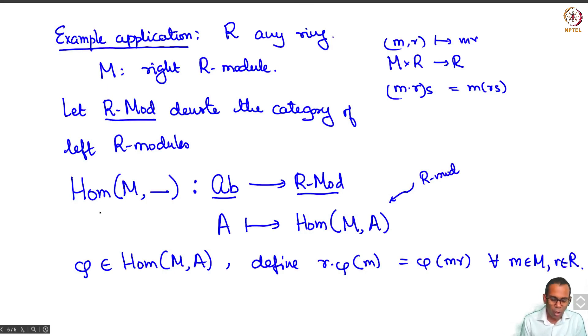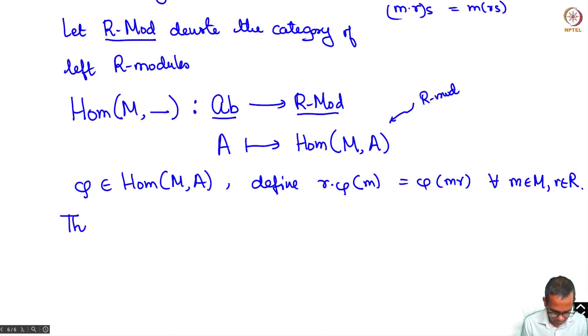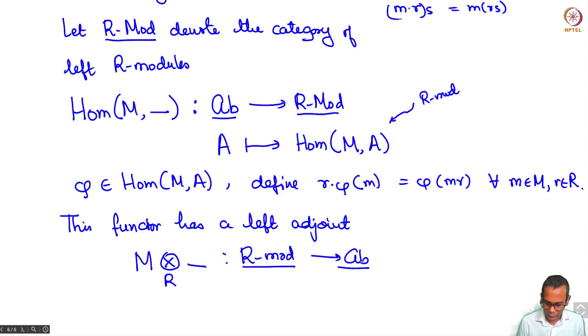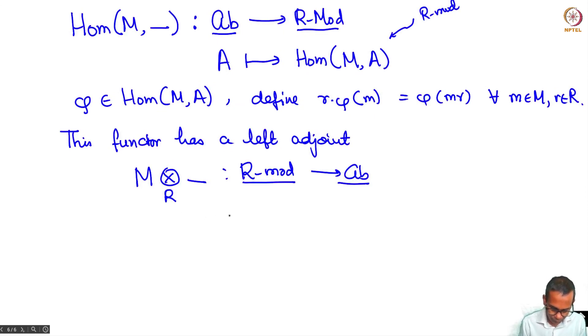So in this way Hom M dash defines a functor from the category of left R modules. This functor has a left adjoint. And that's the functor called tensor with M over R. This is a functor from the category of R modules to the category of abelian groups. N maps to M tensor over R N.